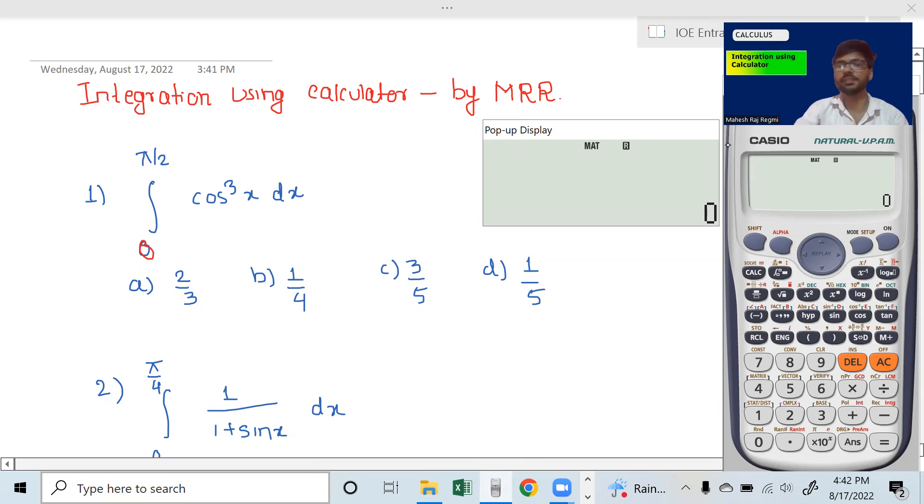This question is simply to make the integration symbol in the calculator. This is the fx991 calculator. In the first time, we have the trigonometric function. We have to keep the radian in the calculator. This is the angle of 5x2 and 5x4.